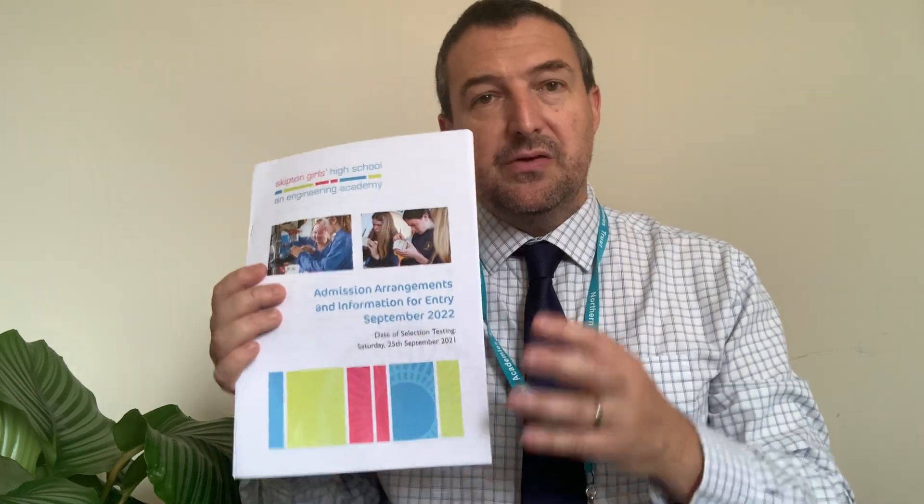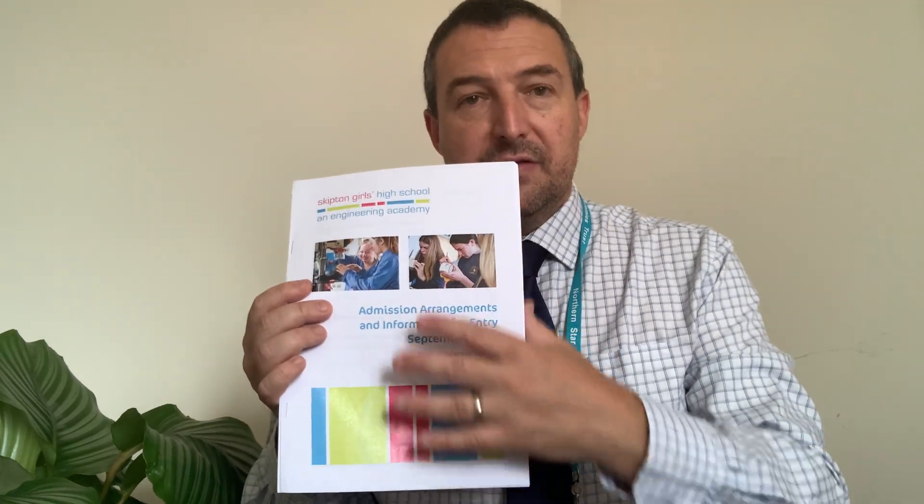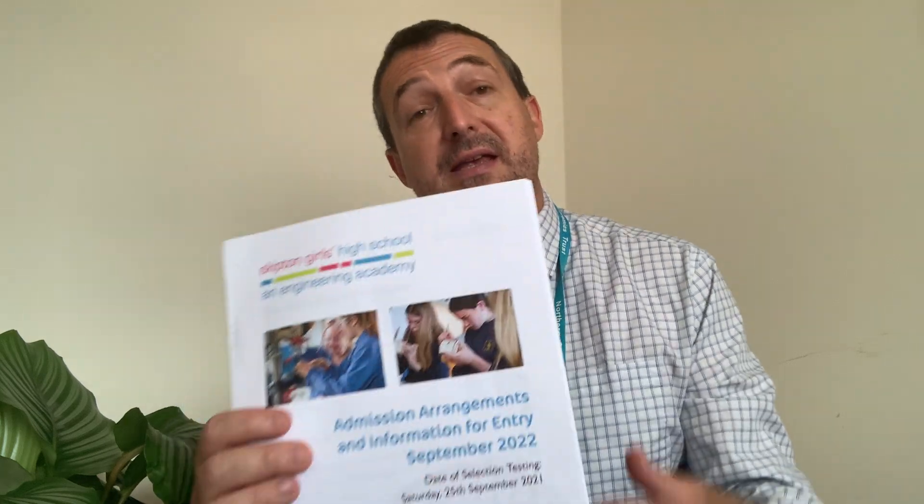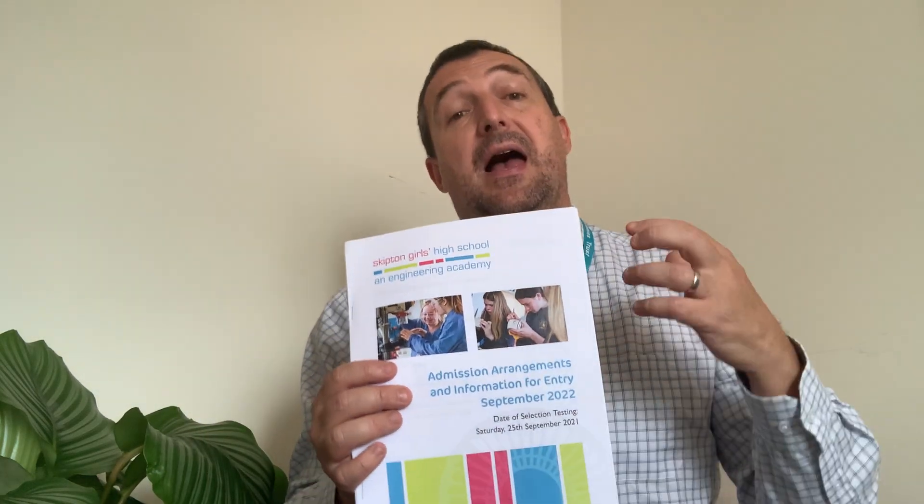The thing that's really good to refer back to, which is on the website, is a document called the Admissions Arrangements Information for Entry September 2022. This gives full details about selection testing, how to apply, what sorts of things are in the selection testing process, some key dates, and all the information around how you apply to your local authority for a place through the common application form, including oversubscription criteria.